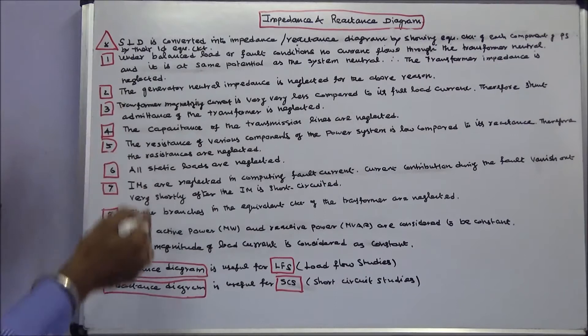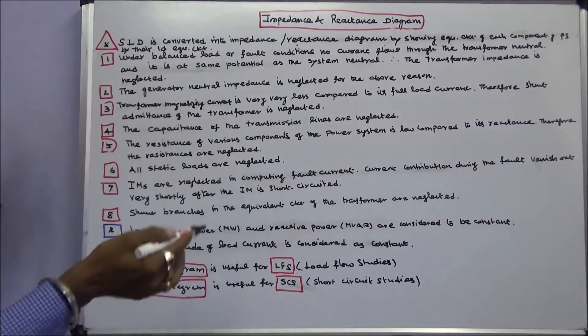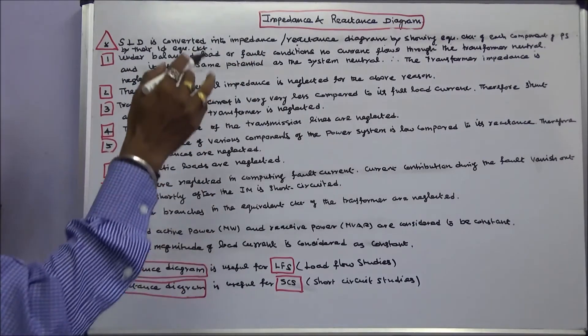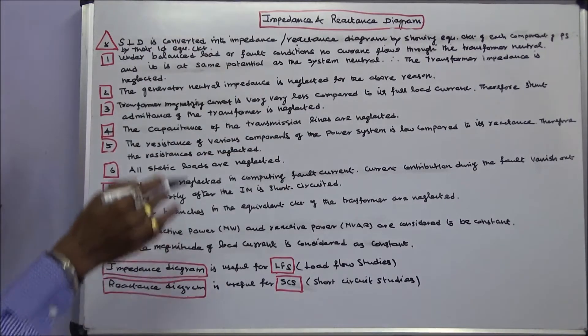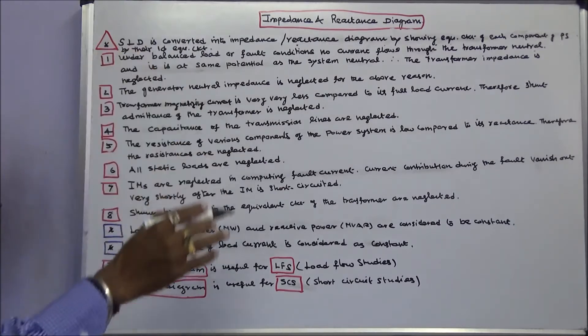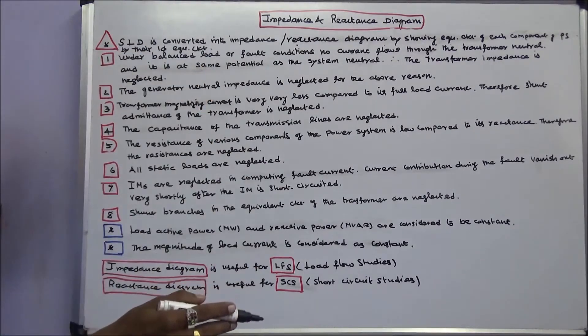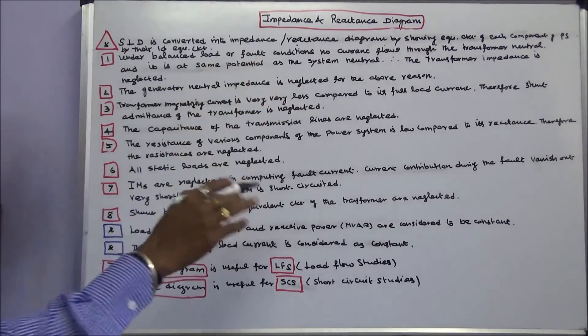First, under balanced load or fault conditions, no current flows through the transformer neutral, and it is at the same potential as the system neutral. Therefore, the transformer impedance is neglected.